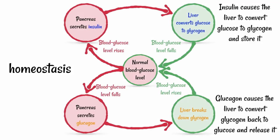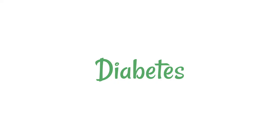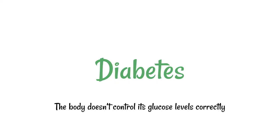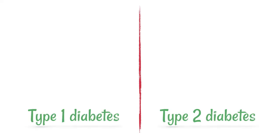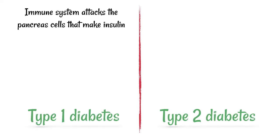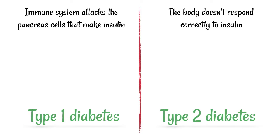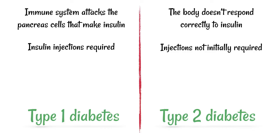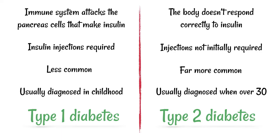This is very different for a person who suffers from diabetes — a condition where the body doesn't control its glucose levels correctly. There are two types: Type 1 diabetes is where the immune system attacks the pancreas cells that make insulin. Type 2 diabetes is where the body doesn't respond correctly to the insulin that is produced. With Type 1, a person takes insulin injections; with Type 2, this is not initially required. Type 1 is less common and usually diagnosed in childhood, while Type 2 is far more common and typically diagnosed in older adults.